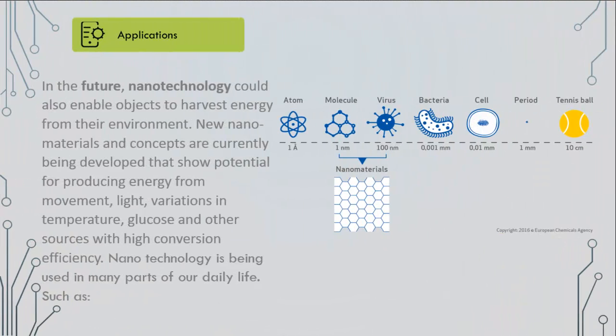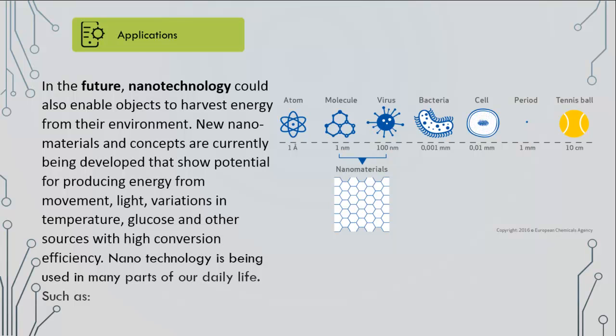Applications of nanotechnology. In the future, nanotechnology could enable objects to harvest energy from their environment. New nanomaterials and concepts are currently being developed that show potential for producing energy from movement, light, variations in temperature, glucose, and other sources with high conversion efficiency. Nanotechnology is being used in many parts of our daily life.